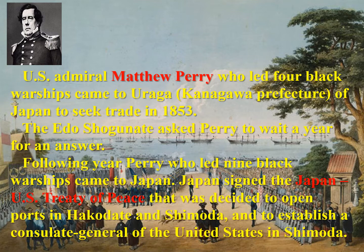The following year, Perry, who led nine black warships, came to Japan. Japan signed the Japan-U.S. Treaty of Peace, which decided to open ports in Hakodate and Shimoda, and to establish a Consulate General of the United States in Shimoda.